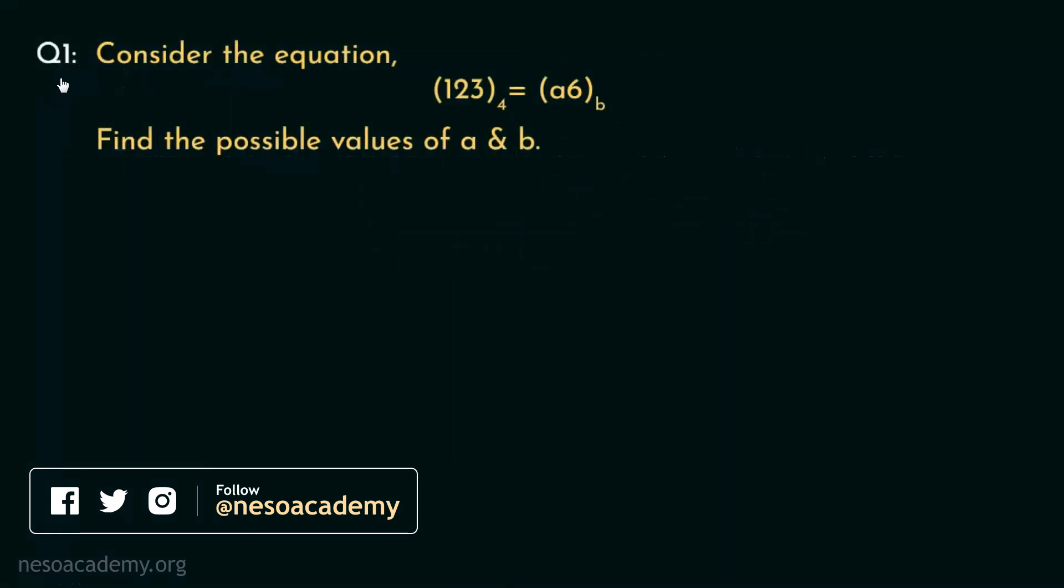Observe this question. Consider the equation (123)₄ = (a6)ᵦ. And we are supposed to find the possible values of a and b. Now in this number, b is the base and a is one of the digits. So let's try to solve it.